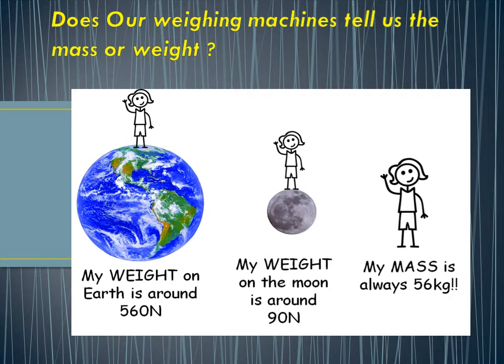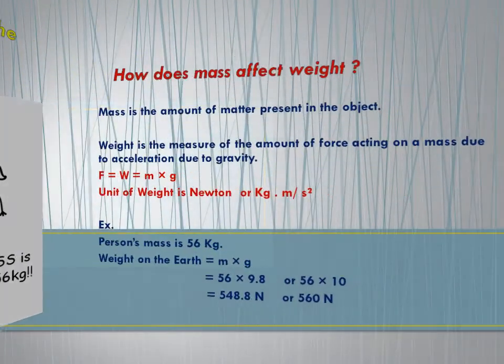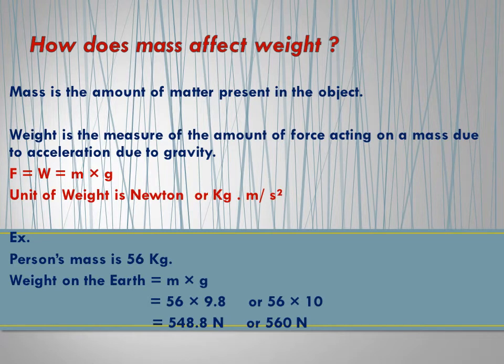Actually, our weighing machine shows the value of our mass. Let us discuss how does mass affect weight. Basically, mass is the amount of matter present in the object, and weight is the measure of the amount of force acting on mass due to the acceleration due to gravity. So its formula becomes W is equal to M into G.